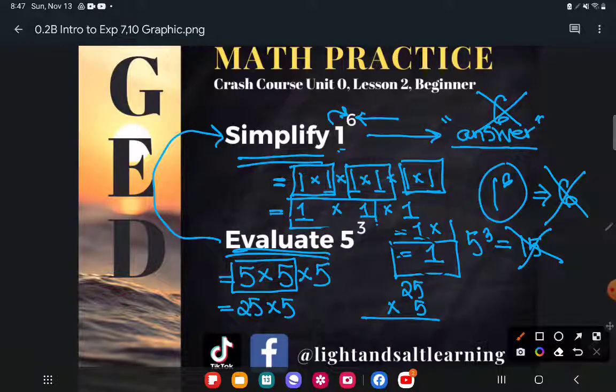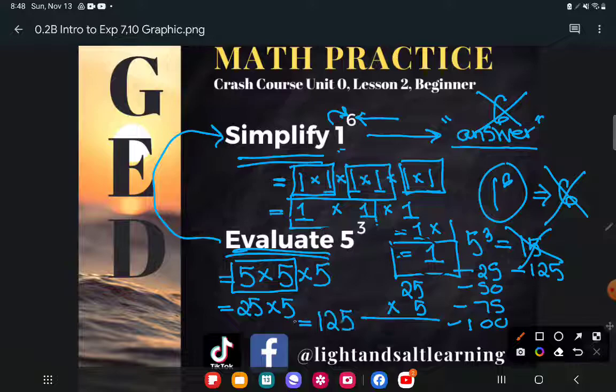25, 50, 75, a dollar, which is the same as a hundred cents. I should be writing this down. 25, 50, 75, a dollar, which is the same as a hundred cents. And then it just repeats, right? A dollar 25 or 125 cents. That's one, two, three, four, five fives. So the final evaluated or simplified answer here is 125.